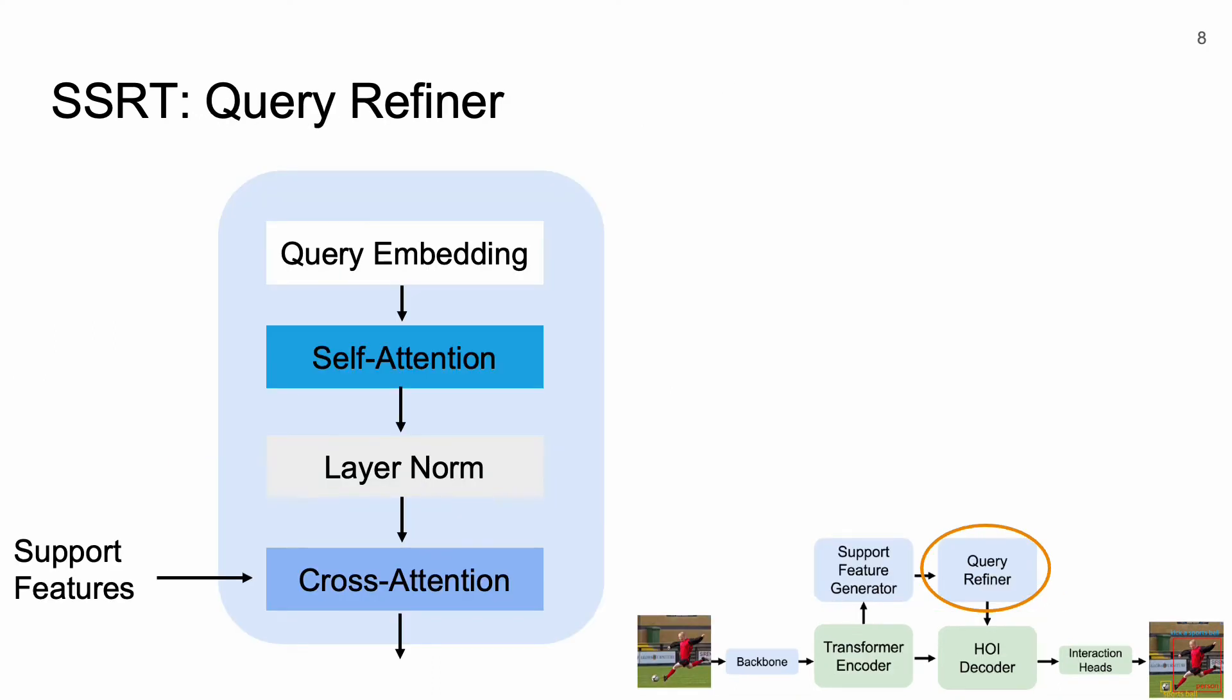Our predicted set of possible object-action candidates will contain noisy predictions. Therefore, we propose a query refiner that allows query embeddings to gather knowledge from the support features. In the query refiner, query embeddings will first attend to themselves and then they will attend to the support features via a cross-attention layer.